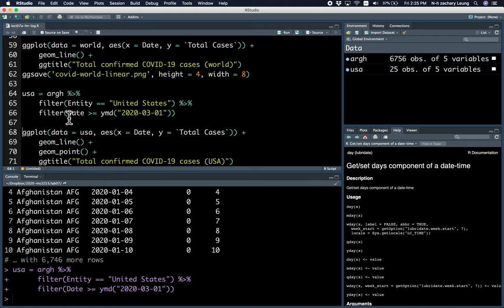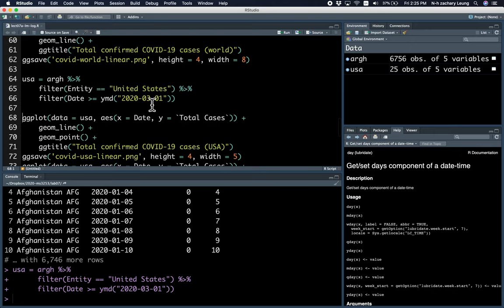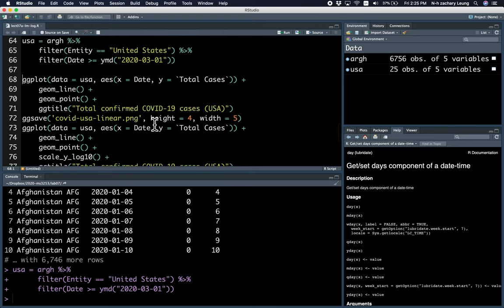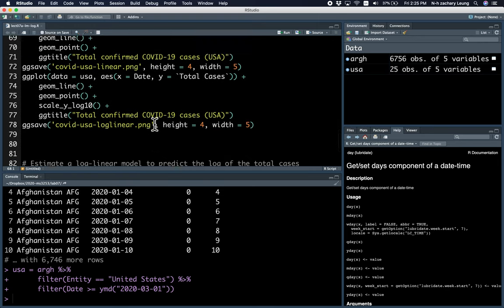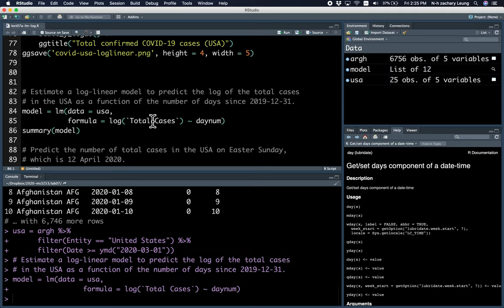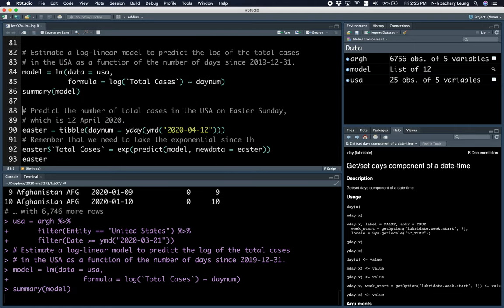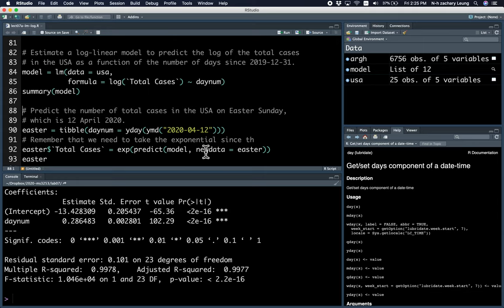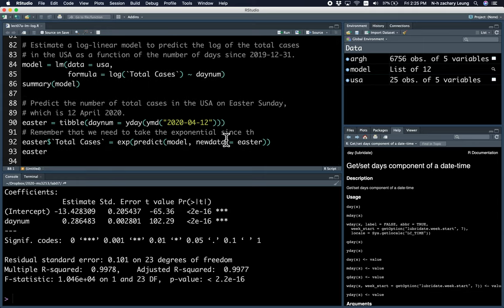And for the regression, I'm going to be only looking at what happens after the 1st of March. All right, so there's some graph plotting, and this is how you do the regression. All right, so notice the log of the y variable against the x variable. And this is what the summary looks like.